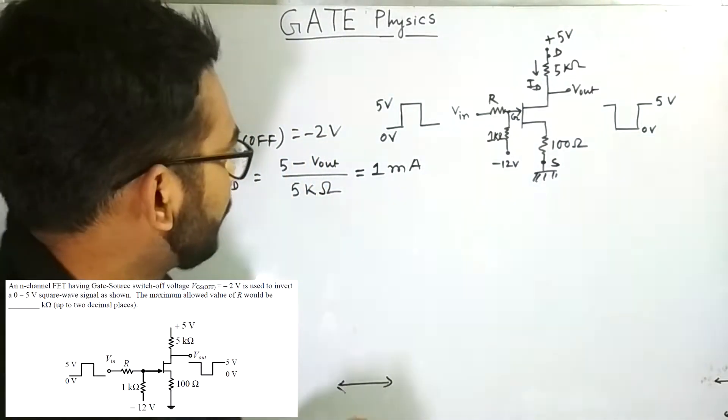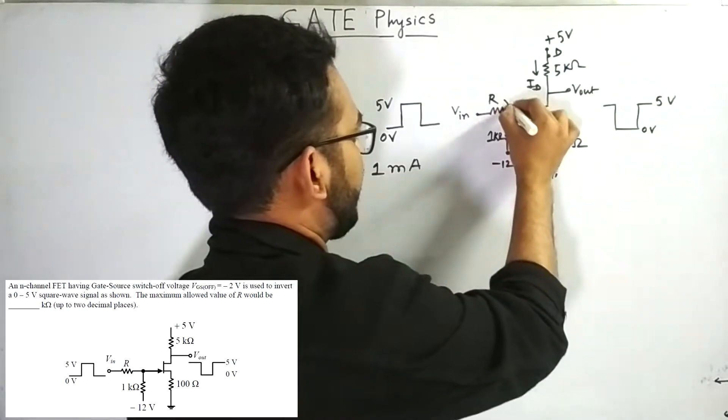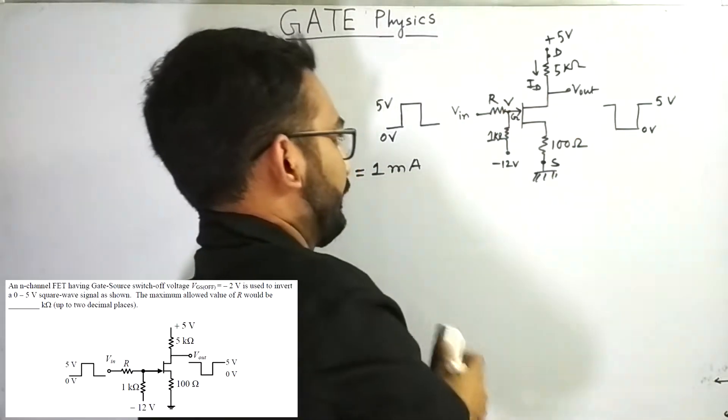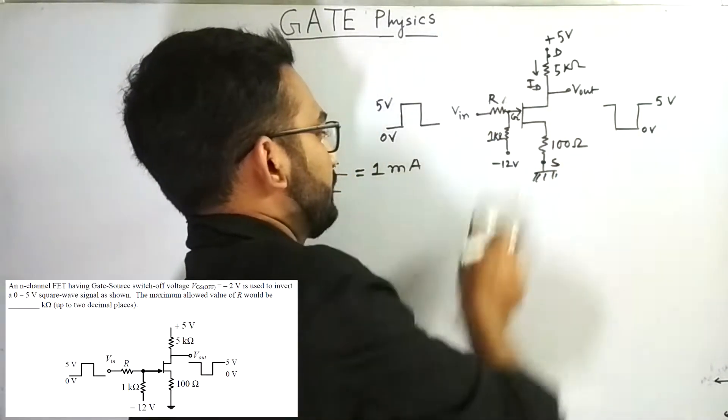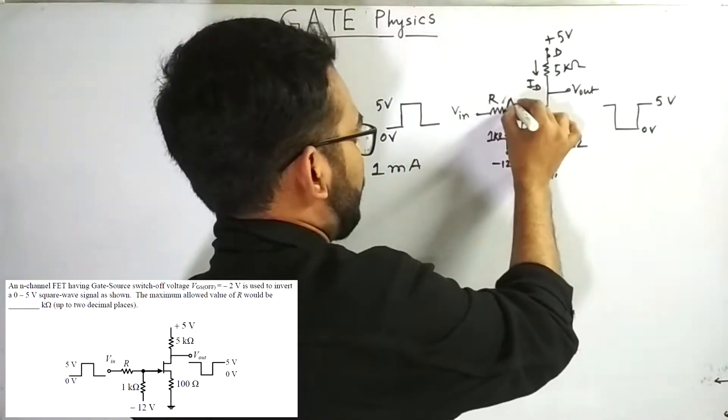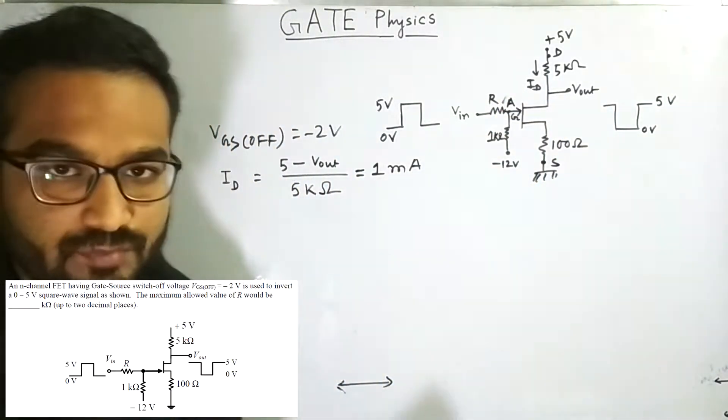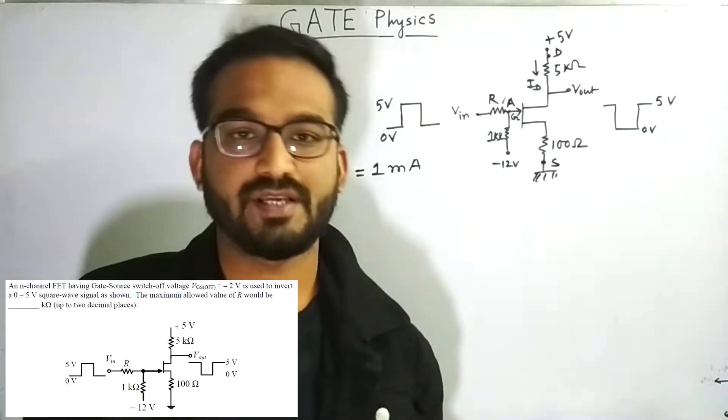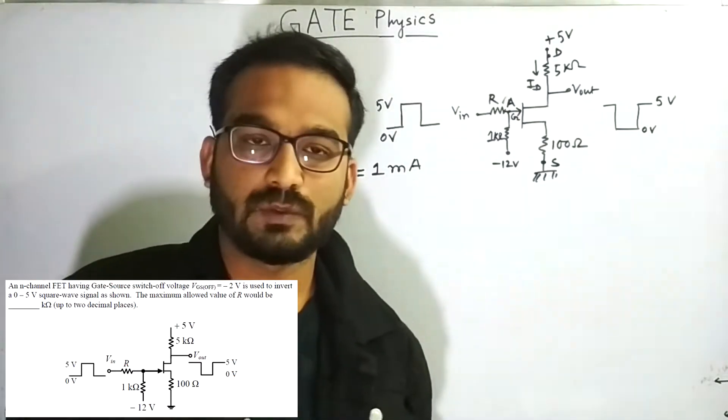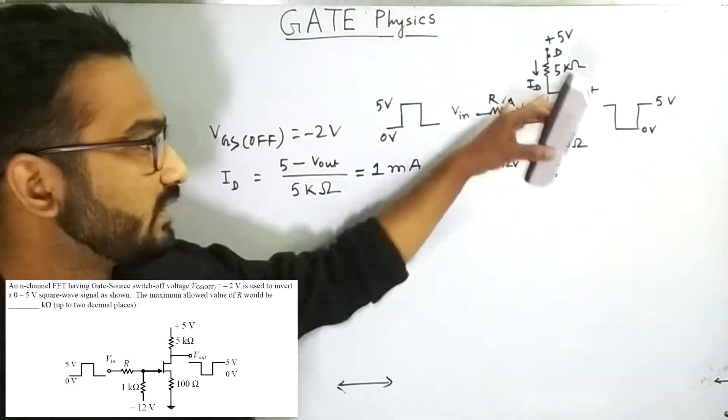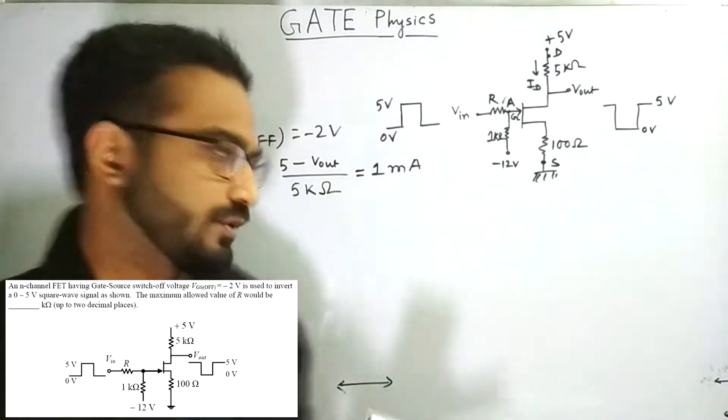Now, what we will do, we will try to calculate the voltage at this point A. So we are naming this gate point as A. We have to calculate the voltage at that point A. Now to calculate the potential at that point A, we are using superposition principle.